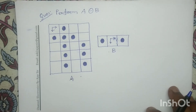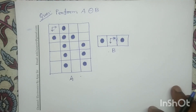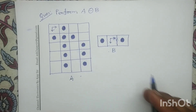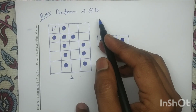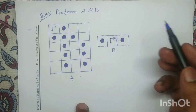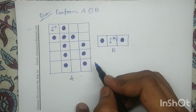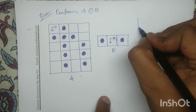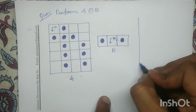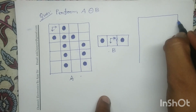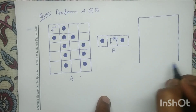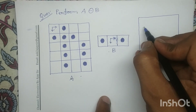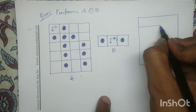So let's start. In order to draw the output image A erosion B, let me draw an output image having the same dimension as the input image, that is 5x4 — having 5 rows and 4 columns.